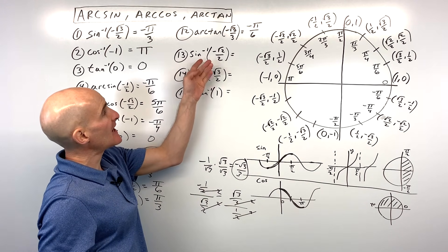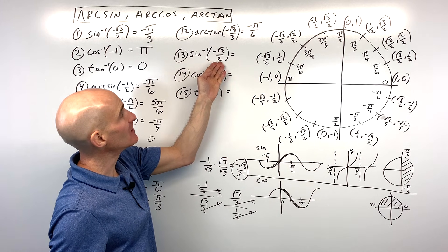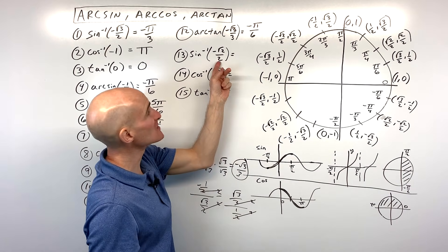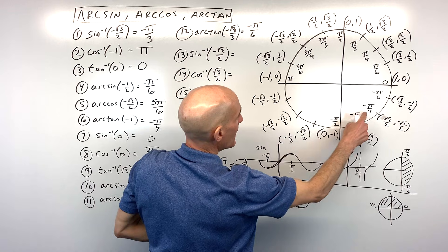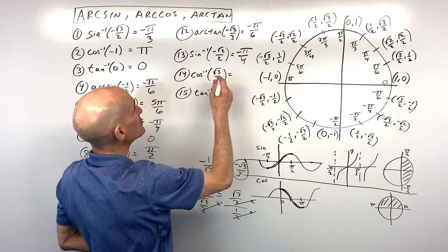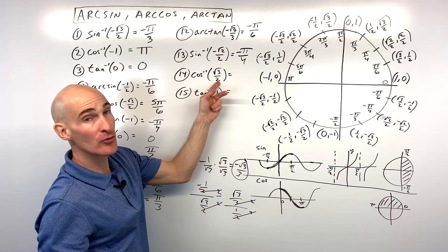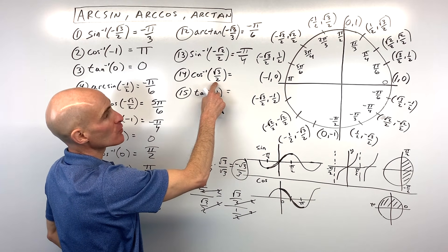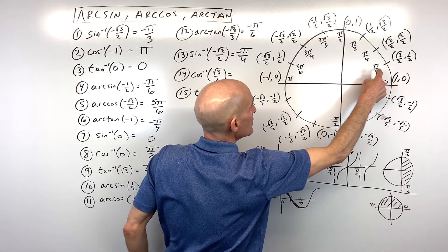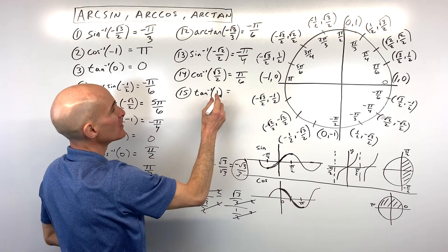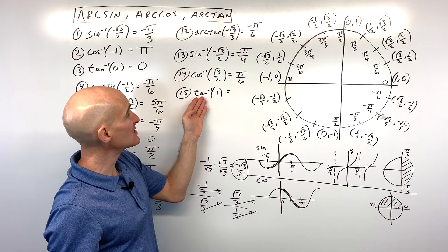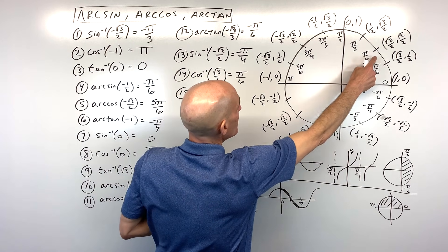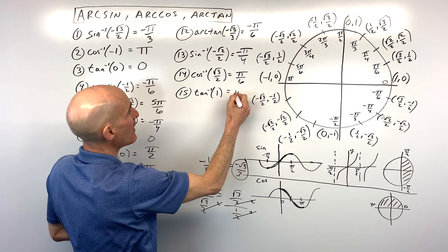For number thirteen, the sine inverse of negative root two over two — sine equals negative root two over two from negative pi over two to positive pi over two, so the answer is negative pi over four. For number fourteen, cosine inverse of root three over two — cosine of what angle equals root three over two from zero to pi? The x-coordinate is root three over two at pi over six, or 30 degrees. For number fifteen, tangent inverse of one — tangent of what angle equals one? Tangent is y over x; anything divided by itself is one, so the answer is pi over four.